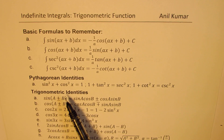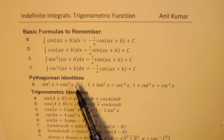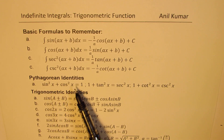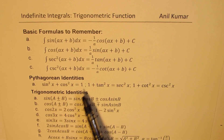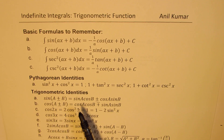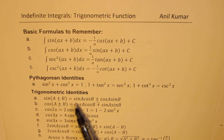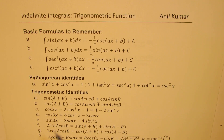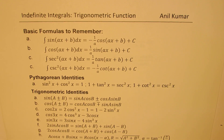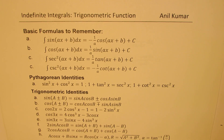You may need to remember the trigonometric identities — the Pythagorean identity, and also identities involving compound angles, double angles, and triple angle formulas. These are very important to remember to solve questions based on integration.